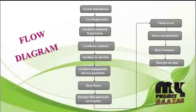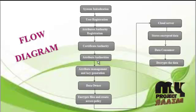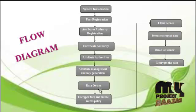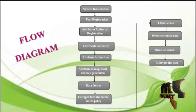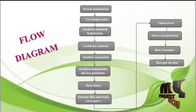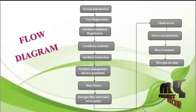Once the user's details are correctly given, the attribute key will be generated and the data owner's details will be generated. In the data owner phase, a collection of files is kept by the data owners themselves. They encrypt all files and create an access policy — these operations are also handled in the data owner phase.